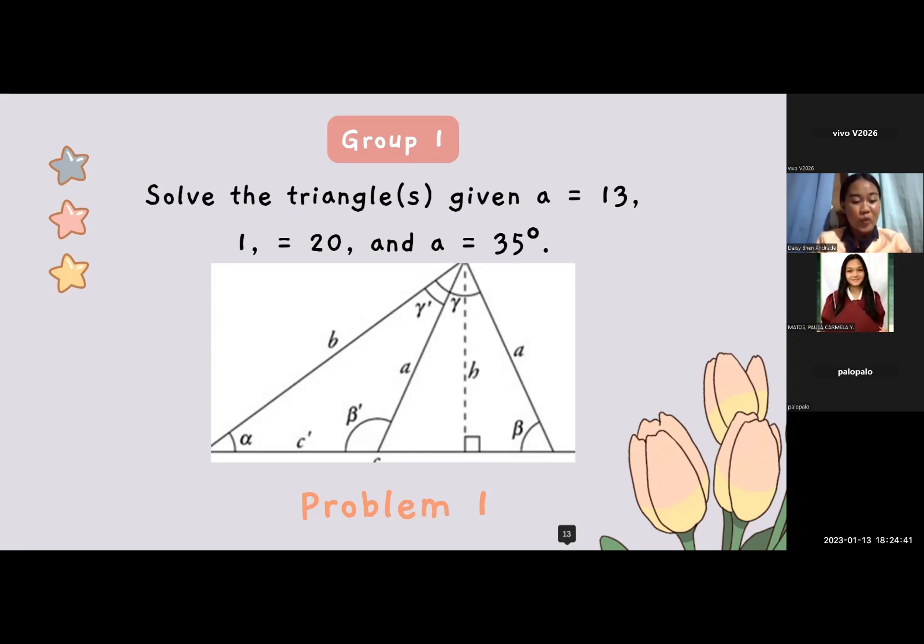Please prepare yourself. We will be having a group activity. I'll divide you into two groups and please take note of the numbers. So, group 1 will be Matos and group 2 will be Palo Palo. So, here is the problem for group 1. Solve the triangle given a is equal to 13, b is equal to 20, and angle A is equal to 35 degrees. Okay, please take a screenshot of the problem. Are you done, Ms. Palo Palo? Okay, then.